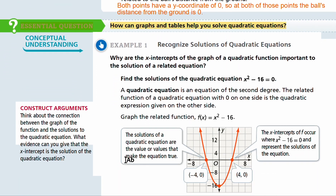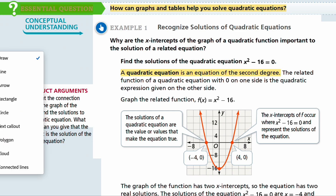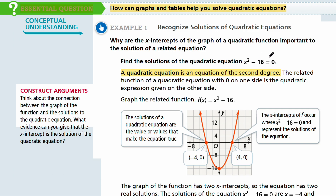Let's start with Example 1: recognize solutions of quadratic equations. Why are the x-intercepts of the graph of a quadratic function important to the solution of a related equation? We have the quadratic equation x squared minus 16 equals 0. A quadratic equation is an equation of the second degree — any equation with a second degree polynomial is quadratic. The related function of a quadratic equation with 0 on one side is the quadratic expression on the other side, so you're going to graph x squared minus 16.